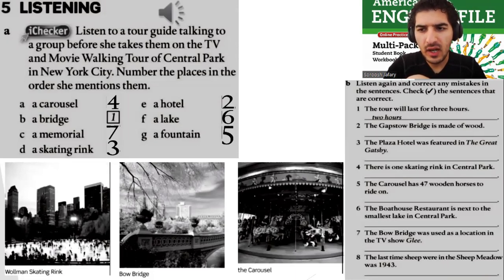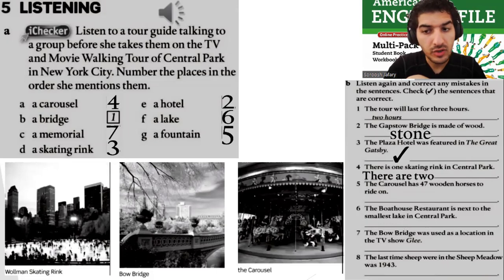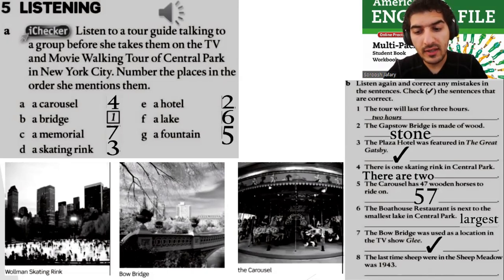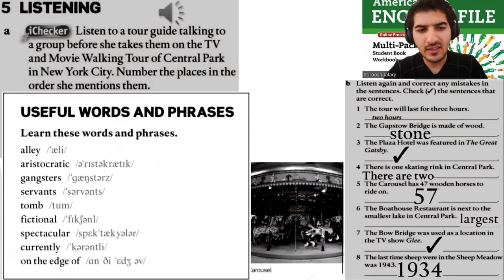Check your answers: the Gapstow Bridge is made of stone. The Plaza Hotel was featured in The Great Gatsby — true. There is one skating rink — no, there are two. The carousel has 47 wooden horses — actually 57. The Boathouse Restaurant is next to the smallest lake — actually the largest. The Bow Bridge was used in the TV show Glee — true. The last time sheep were in the Sheep Meadow was 1943 — no, it was 1934.